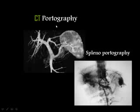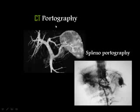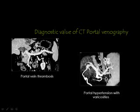This is CT portography. Previously, a needle was introduced into the spleen and contrast injected to visualize the portal vein — a dangerous technique frequently complicated by subcapsular hematoma or even splenic rupture. Now, contrast is injected intravenously and multi-detector CT scans the portal vein. Undesired structures such as the liver, stomach, and pancreas are subtracted, leaving the spleen, portal vein, and splenic vein. This technique demonstrates abnormalities such as portal vein thrombosis or esophageal varices in cirrhosis.